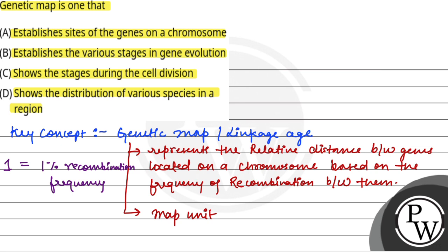So this is a genetic map. Now we know what a genetic map is — it establishes the site of genes on a chromosome. I hope you understood it. Best of luck.